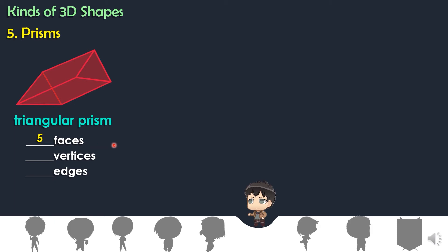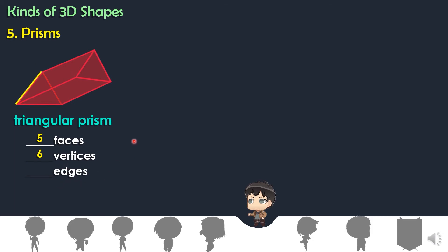How about vertices? One, two, three, four, five, six. Triangular prism has six vertices. Let's count the edges: one, two, three, four, five, six, seven, eight, nine. Triangular prism has nine edges.